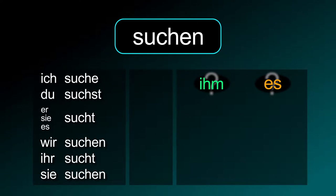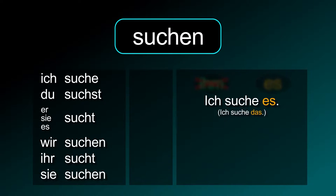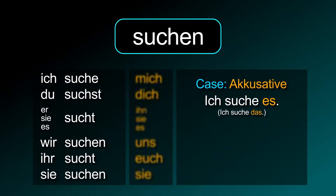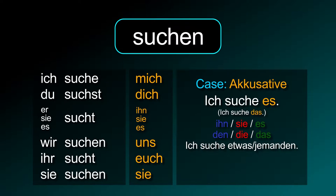This verb needs the accusative case. Therefore, the correct way to say 'I look for that' is: ich suche es, or ich suche das. Use the correct personal pronoun or article depending on the noun or the person's gender. Or maybe you just want to say 'I'm looking for something': ich suche etwas, or somebody: ich suche jemanden.